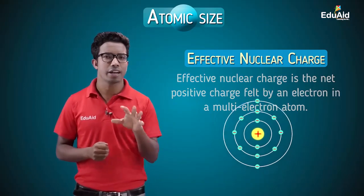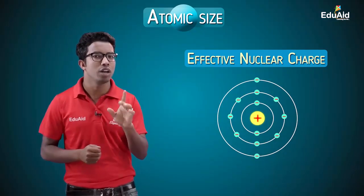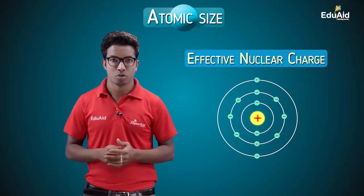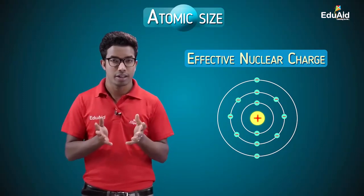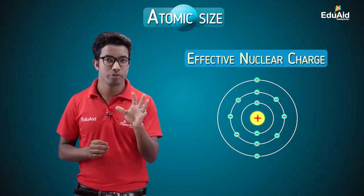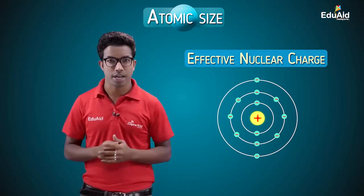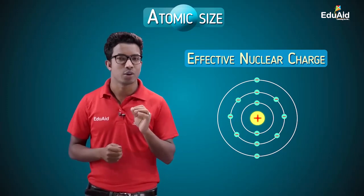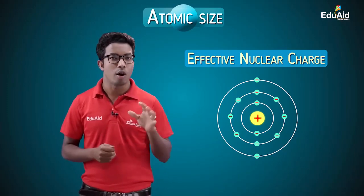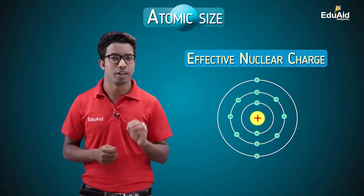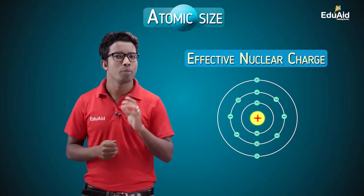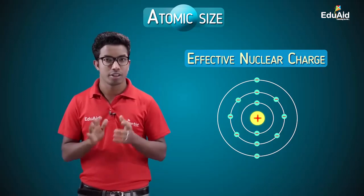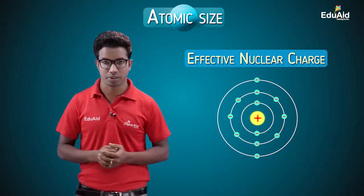You might be thinking that since there is only one nucleus and its charge is fixed, all electrons in that atom should feel the same amount of positive charge from the nucleus. But that is not the case — all electrons don't feel the same amount. Let's understand effective nuclear charge with an analogy.